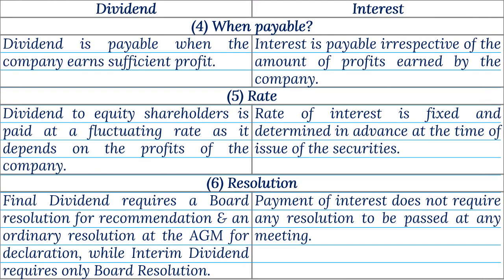Point 4 — When Payable: Dividend is payable when the company earns sufficient profit. Interest is payable irrespective of the amount of profits earned by the company. Point 5 — Rate: Dividend to equity shareholders is paid at a fluctuating rate as it depends on the profits of the company. The rate of interest is fixed and determined in advance at the time of issue of the securities.